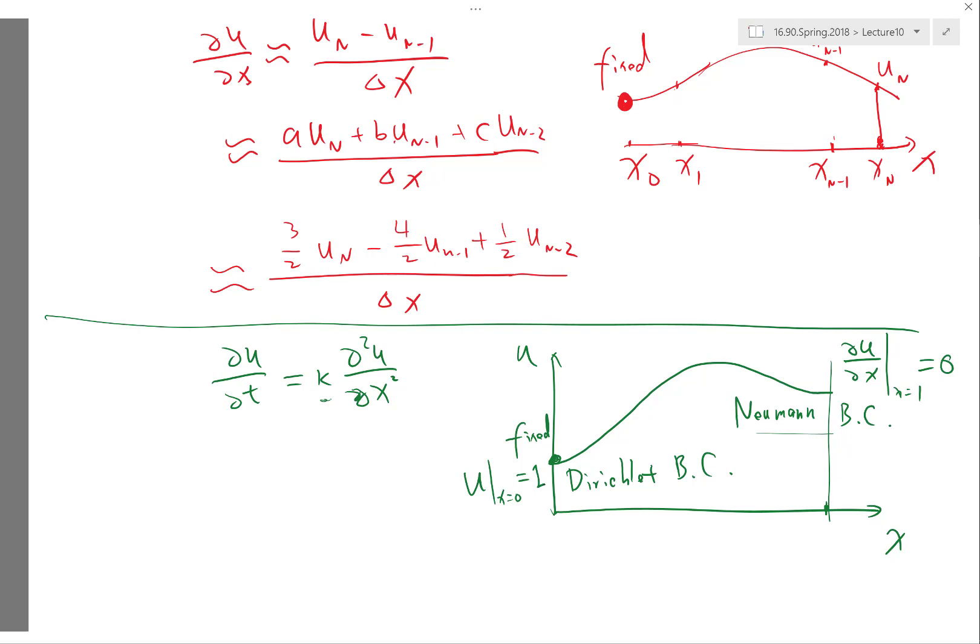In what case would you apply a Neumann boundary condition? When it's an insulated wall? Yeah, when it's an insulated wall, at which case you know partial u partial x would be equal to 0.